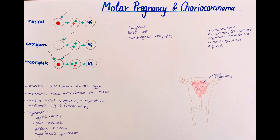In an incomplete molar pregnancy, a genetically normal oocyte is fertilized by two spermatocytes simultaneously, leading to the formation of a zygote with 69 chromosomes — 23 from the oocyte, 23 from the first spermatocyte, and another 23 from the second spermatocyte. A fetus starts to develop as maternal and paternal genetic material is present, but it is not able to survive. This usually leads to a miscarriage.